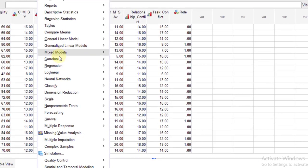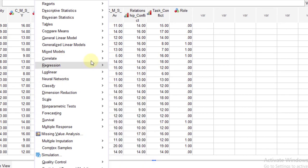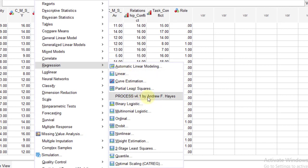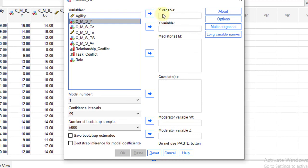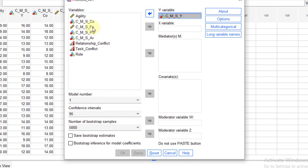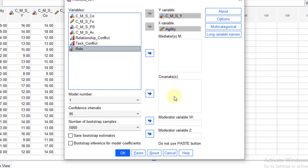Go to Analyze, Regression, Process 4.1 by Andrew F. Hayes. Then here CMSY is the dependent variable Y. Agility is independent variable. Role, this is moderator.